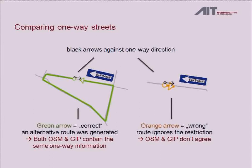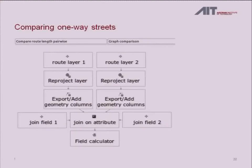For one-way streets we used a similar approach: extract the one-way geometries — just really short parts in the middle of the line, the forbidden geometry — and route between endpoints in the other graph. On the left side it finds a way around the one-way because it knows about it; on the right side it doesn't know and just goes through. The model calculates and adds geometry columns, calculates line lengths, and we compare: since the extracts are always just 10 meters short, if the resulting route in OpenStreetMap is much longer, we know it found a way around it and the one-way was modeled correctly.